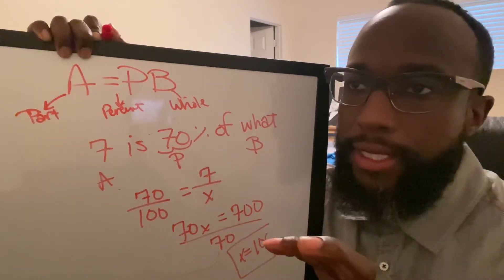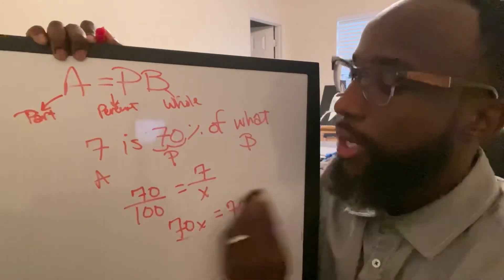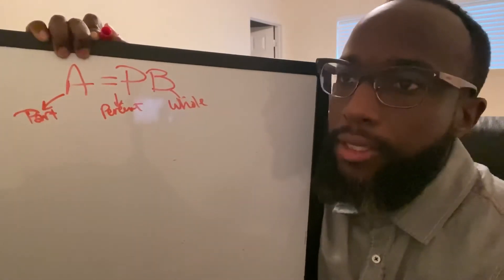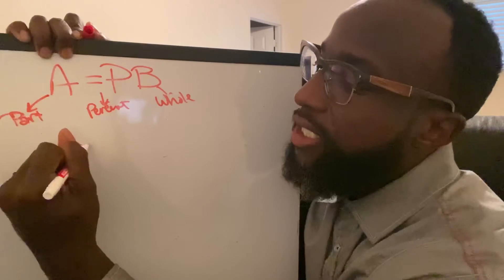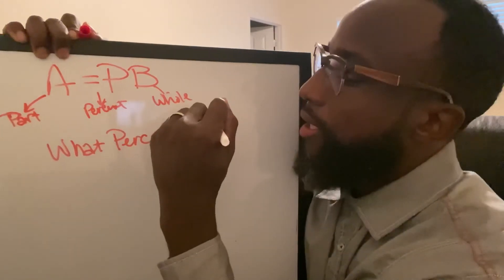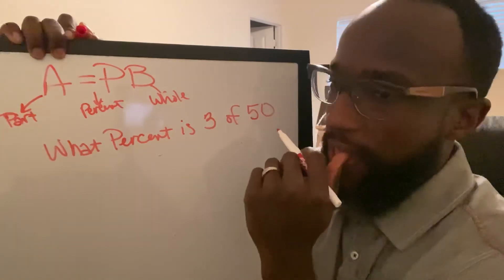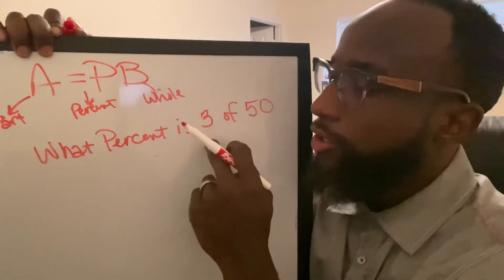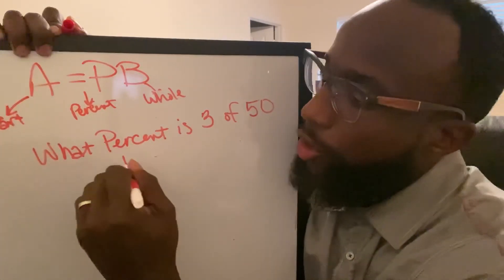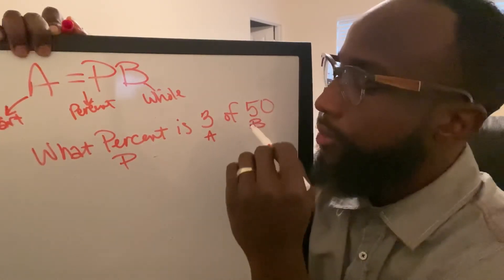The last part is finding the percent. The last example is a percent. So we found a part, we did the math to find a whole number. Let's do one where we got to find a percent. They'll be like, what percent is 3 of 50? How much of 3 is 50? That's basically what they're asking. We don't know the P, we know the A, we know the whole.